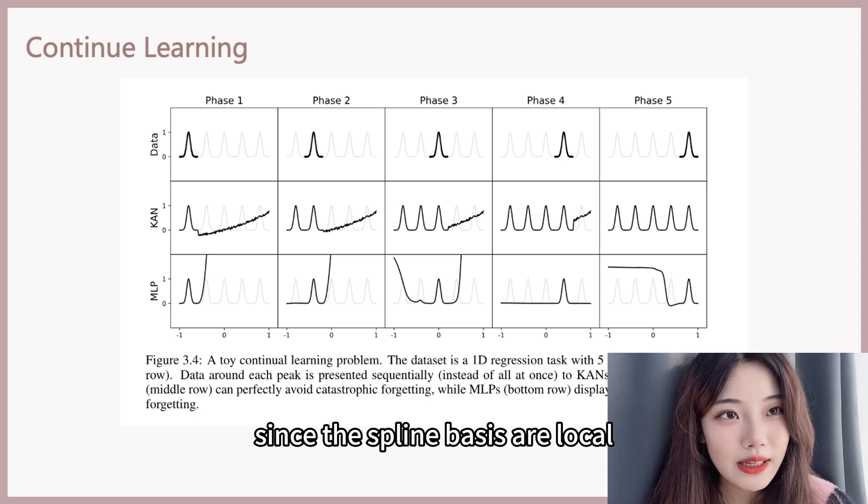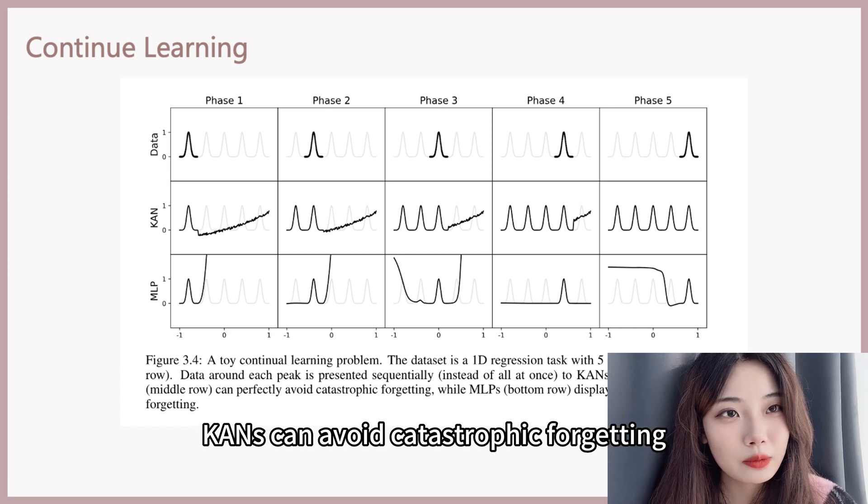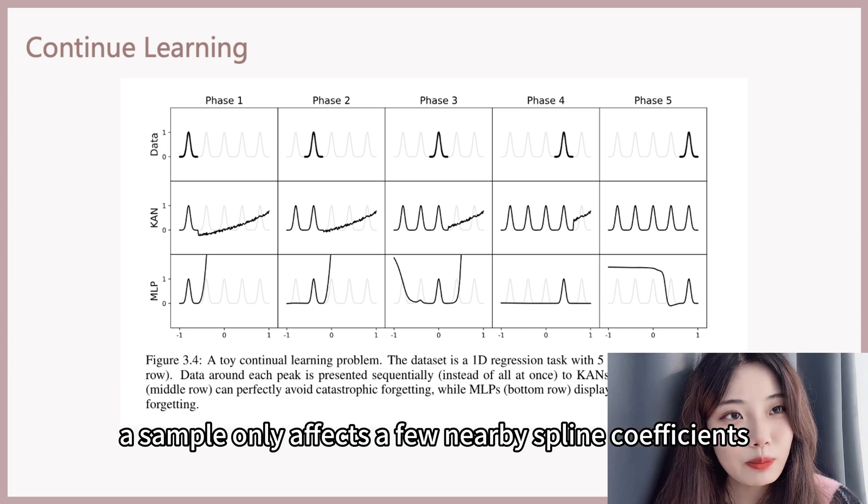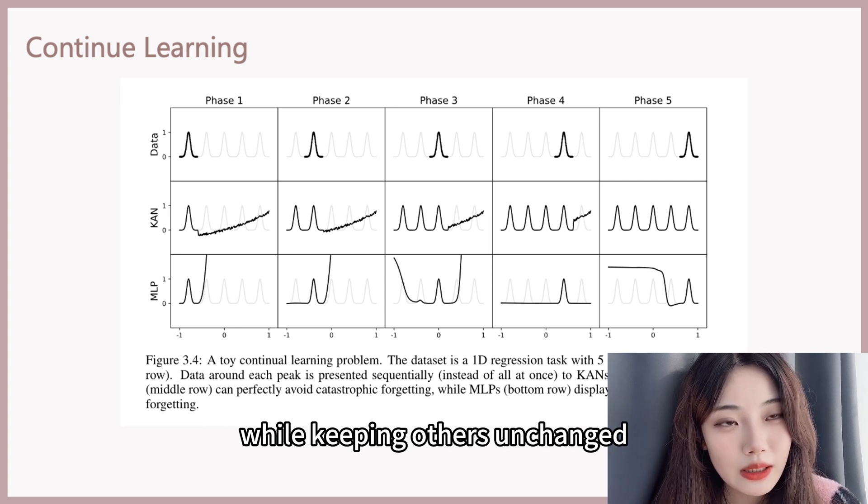Since the spline bases are local, KAN can avoid catastrophic forgetting. A sample only affects a few nearby spline coefficients while keeping others unchanged.